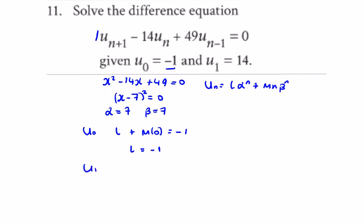For u₁, alpha is 7 times l plus beta which is 7 times mn, so m times 1 times 7 is equal to 14. So we get minus 7 plus 7m equals 14, so 7m will be 21, so m will be 3.